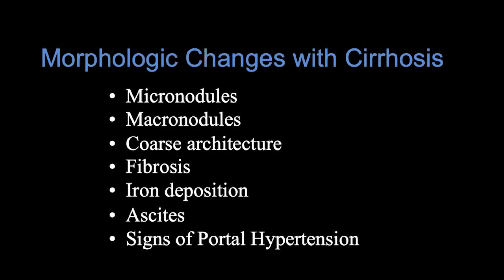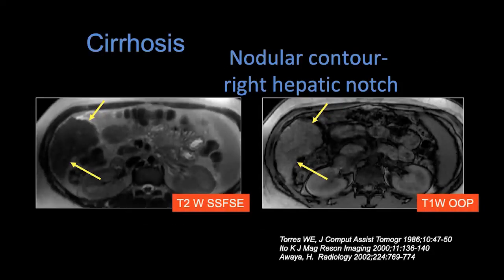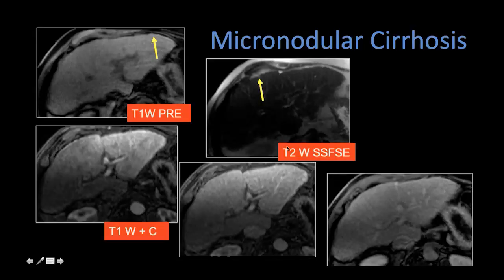The morphological changes that we see with cirrhosis can be varied. It can be micronodular or macronodular. You may see changes in architecture, the presence of fibrosis, varying iron deposition patterns, and of course ascites and other stigmata of portal hypertension. We can see nodular surface, and sometimes the other features we'll see is a right hepatic notch sign, which is often tucked in between segment five and six of the liver. You may see these small nodules around the edges of the liver — micronodular changes.